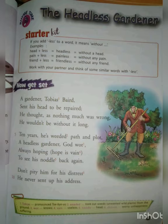Now come to the third line: 'He thought as nothing much was wrong.' The last word of the third line is 'wrong.' And 'he wouldn't be without it long' — the last word of the fourth line is 'long.' Wrong and long are similar-sounding words, meaning rhyming words. Line number five: 'Ten years he has weeded path and plot.' The last word of the fifth line is 'plot.' And 'a headless gardener got what' — the last word of the sixth line is 'what.' Plot and what are rhyming.